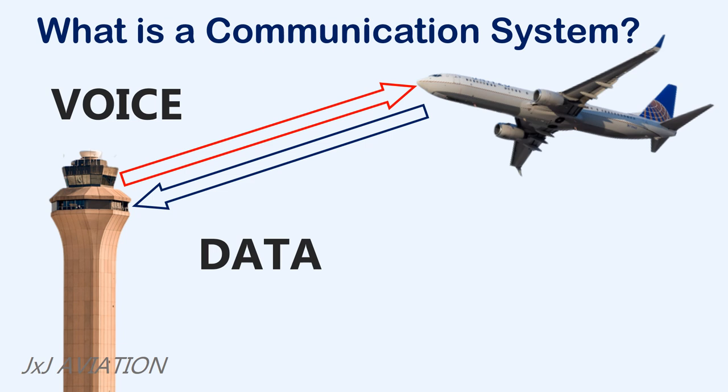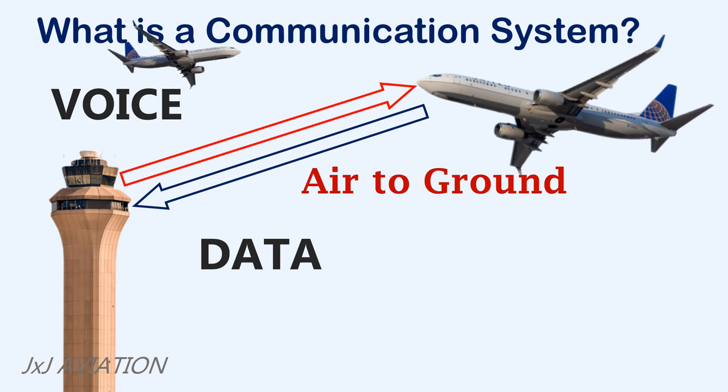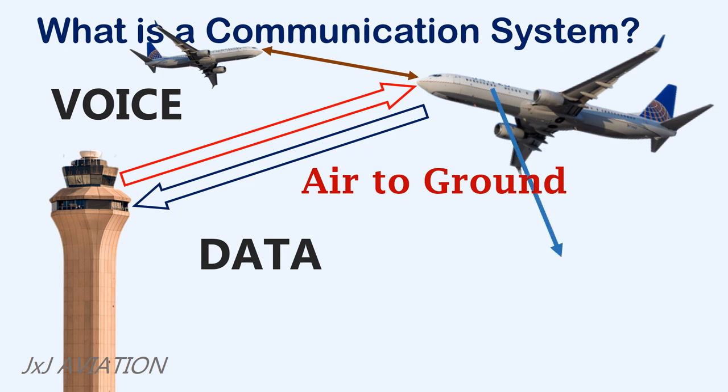This system should be able to manage communication outside the aircraft, which is from aircraft to the ground station or with another aircraft in flight. It should also manage communication within the aircraft, which is via the interphone for communicating with other crew members or to make announcements in the cabin.